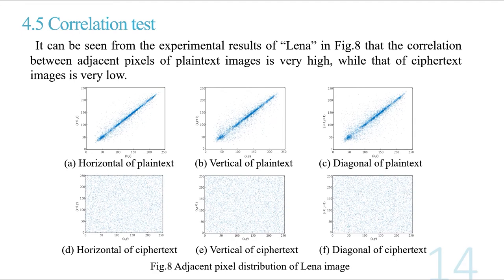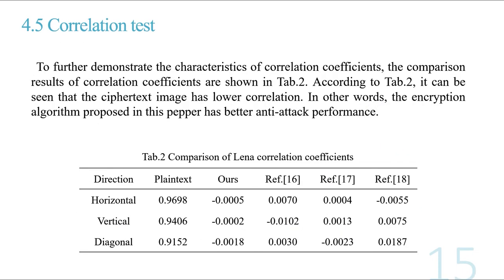It can be seen from the experimental results in Figure 8 that the correlation between adjacent pixels of the plaintext image is very high. To further demonstrate the correlation coefficients, the comparison results are shown in Table 2. According to Table 2, the encrypted image has lower correlation, meaning the encryption algorithm proposed in this paper has better anti-attack performance.